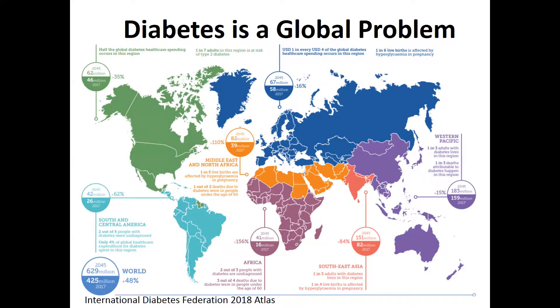Diabetes is also a global problem. Dr. Grusner mentioned that we have about a quarter million people with diabetes in Brooklyn, about 10% of the population of 2.5 million. There are about 425 million people in the world today with diabetes. The largest number currently is in the Western Pacific and China, then the Indian subcontinent, then the United States and Europe. Everywhere, diabetes is increasing and doesn't seem to be slowing down.